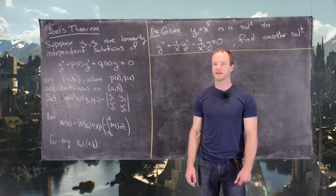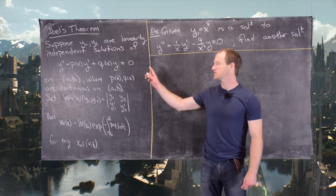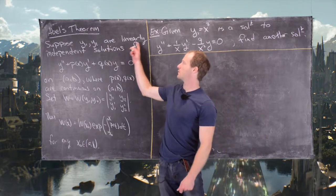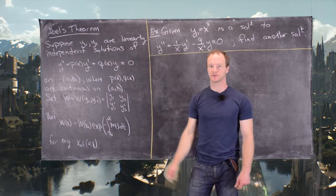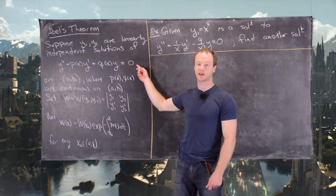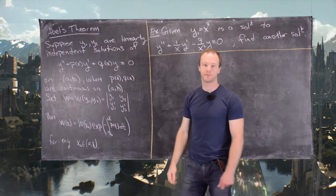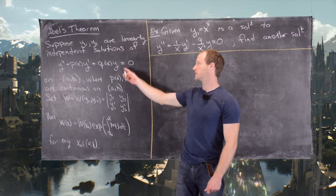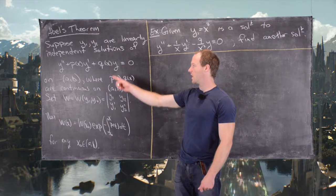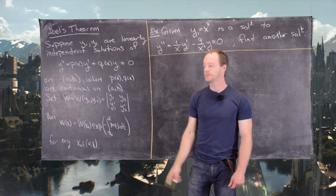In this video we're going to look at an example of an application of Abel's Theorem. So let's just recall what that says. We have y1 and y2, which are linearly independent solutions to the following homogeneous linear second-order differential equation: y double prime plus p of x times y prime plus q of x times y equals 0, on an interval (a, b), where p and q are continuous on (a, b).